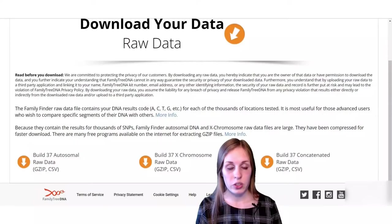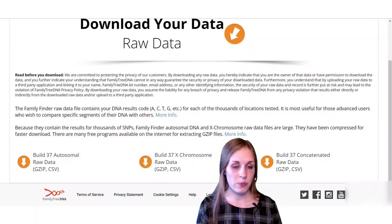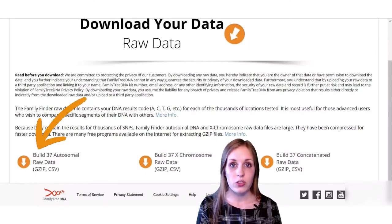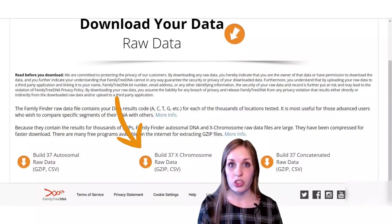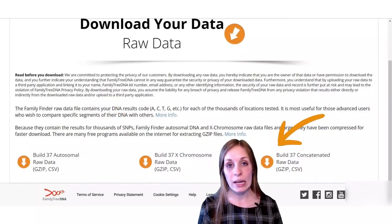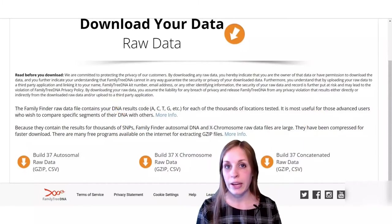You can see there are a couple of different options for the data you can download. First, there's just the autosomal; there's also just the X chromosome; and then there's the concatenated data, which is the autosomal and X chromosome data combined.